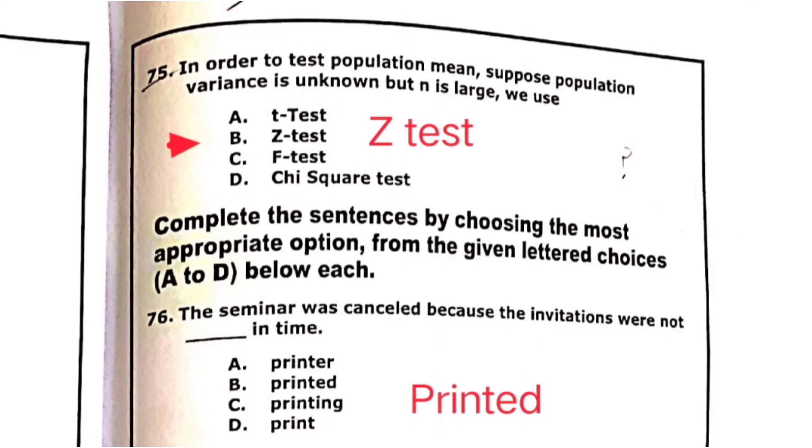75: in order to test population mean, suppose population variance is unknown but N is large, we use Z test. It's the correct option. And question 76 is: the seminar was cancelled because the invitations were not printed. The option B is correct.